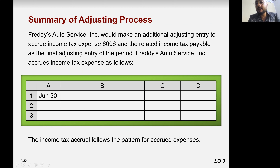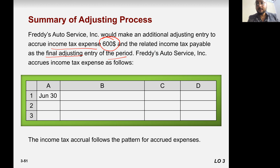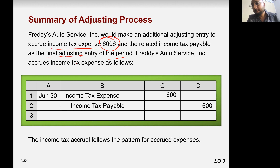Friday at a service incorporation will make an additional adjustment entry to accrue income tax. Income tax occurred but they didn't pay yet — 600. And the related income tax payable as a final adjusting entry of the period. So 600, they already created the liability, accrued liability. But they are now paying that. So the entry is going to be: income tax expense to income tax payable.